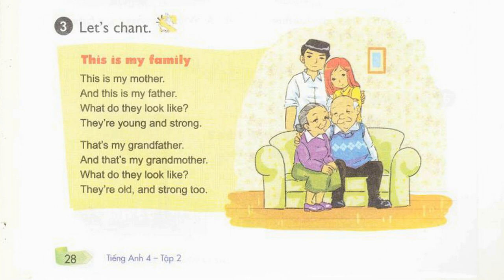Page 28, Activity 3. Let's chant. This is my family. 1, 2, 3, 4. This is my mother, and this is my father. What do they look like? They're young and strong. That's my grandfather, and that's my grandmother. What do they look like? They're old and strong too.